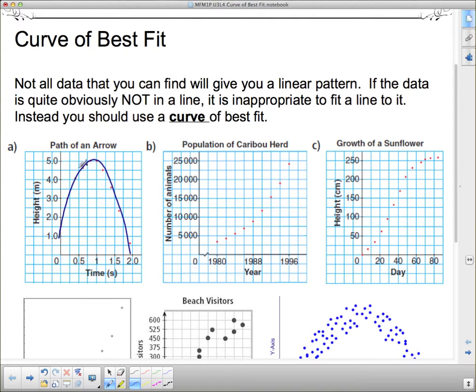So, a lot of times when you will see things like that where it goes up and comes back down again, especially if you take a look at what the subject of this is, the path of an arrow, any kind of projectile does not follow a linear pattern because it has to go up and come back down again. And it doesn't go straight up and straight down in a linear pattern.